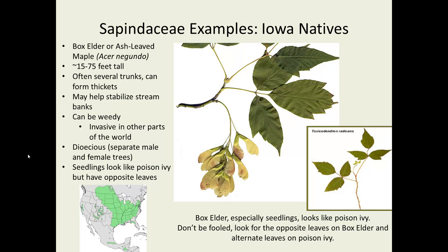An Iowa native is the box elder. You might not think it's a maple, but it actually is — you can look at the seeds and definitely see that it is. It's also called ash-leaved maple and dozens of other names. It has quite a wide range throughout the United States, which tends to lead to many different common names. It's probably easiest to remember it as Acer negundo. It stays fairly small, is often multi-trunked, and can be used to stabilize stream banks and create thickets for wildlife. It tends to get a little rampant, though, and has become invasive in other parts of the world where it's been introduced.